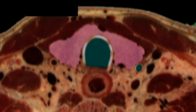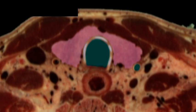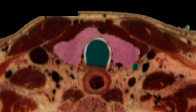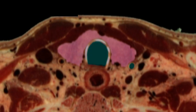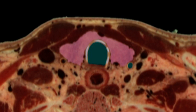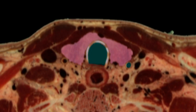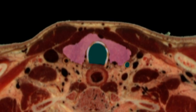These images from VH Dissector show the intact thyroid gland and its relationship to the musculature, the trachea, and the esophagus.